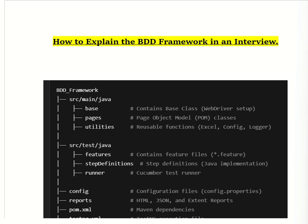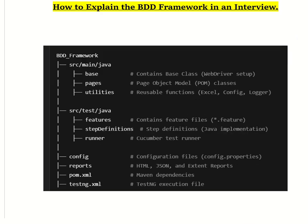The third component is the test runner file. The test runner is used to execute the feature file. It uses JUnit or TestNG framework and specifies where the feature files and step definitions are located.